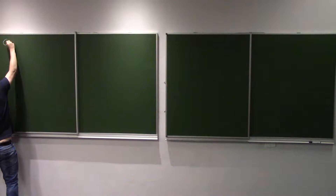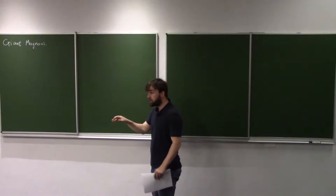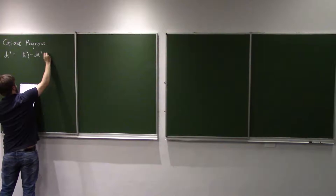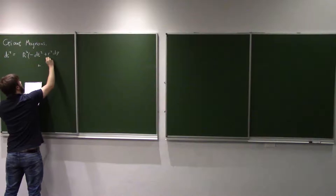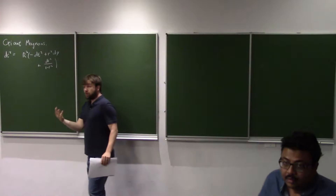Just to recap what we did last time: we discussed these time numbers, which were classical string solutions on the AdS space file, specifically on the R-for-space subsides. The metric we worked with was R squared minus T squared plus R squared dφ squared plus dR squared over 1 minus R squared. This is the R-for-space metric from AdS space.